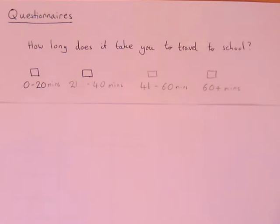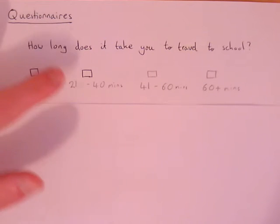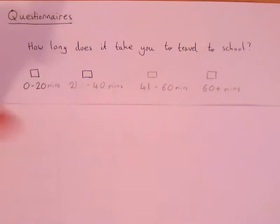So imagine you were on the street asking this question to hundreds of people in a day and you've ended up with 100 questions like this all answered with ticks in different boxes. I don't want to have to go through and try and remember how many people took 0 to 20 minutes, how many people took 21 to 40 minutes, etc. It would just be too confusing and it would take too long.